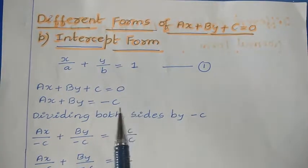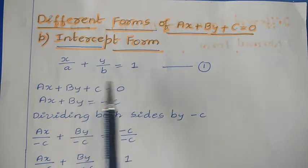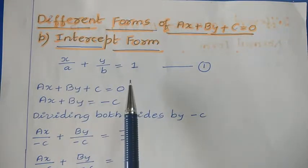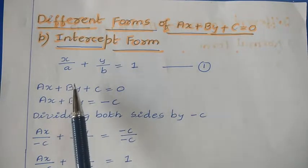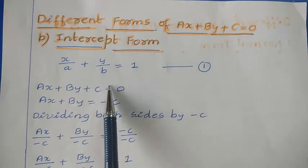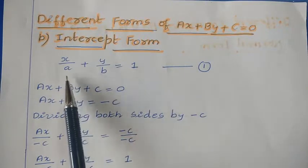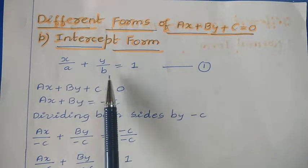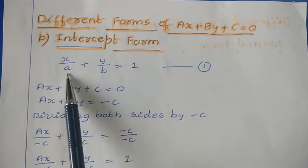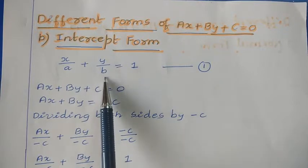We already know that the intercept form can be represented using the equation X divided by A plus Y divided by B is equal to 1, where A is the X intercept and B is the Y intercept.